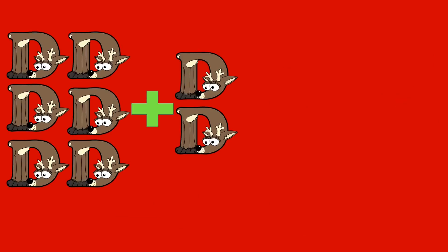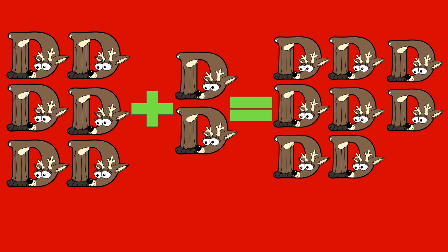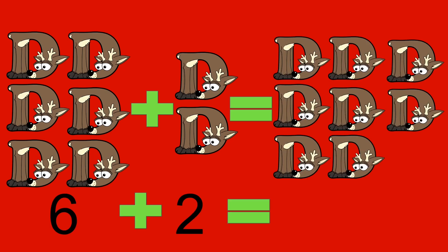6 deer plus 2 deer equals 8 deer. 6 plus 2 equals 8.